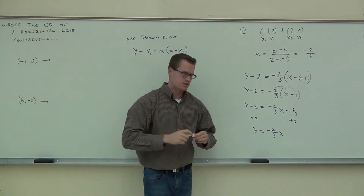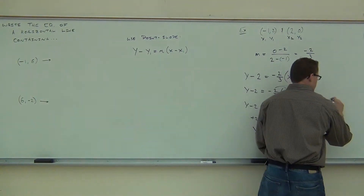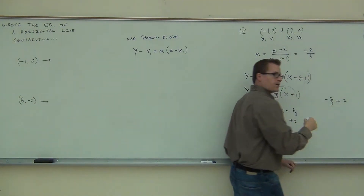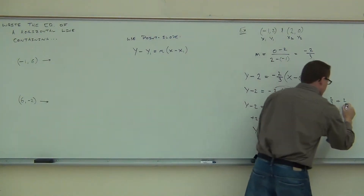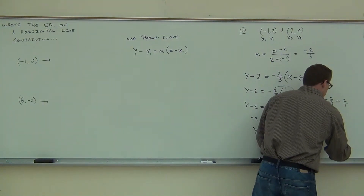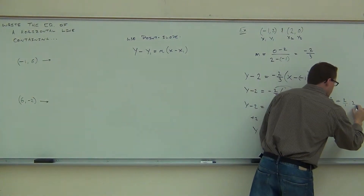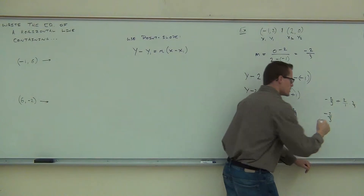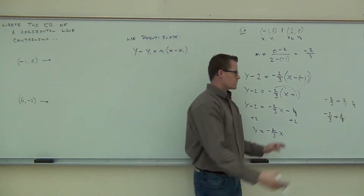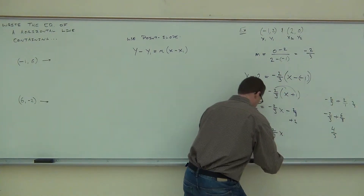How do you do negative 2 thirds plus 2? Work it off to the side: negative 2 thirds plus 2 over 1. You need a common denominator — this is just adding fractions from a long time ago. Multiply 2 by 3 over 3 to get plus 6 thirds, which is equivalent to 2. Combine those together and you get positive 4 thirds.